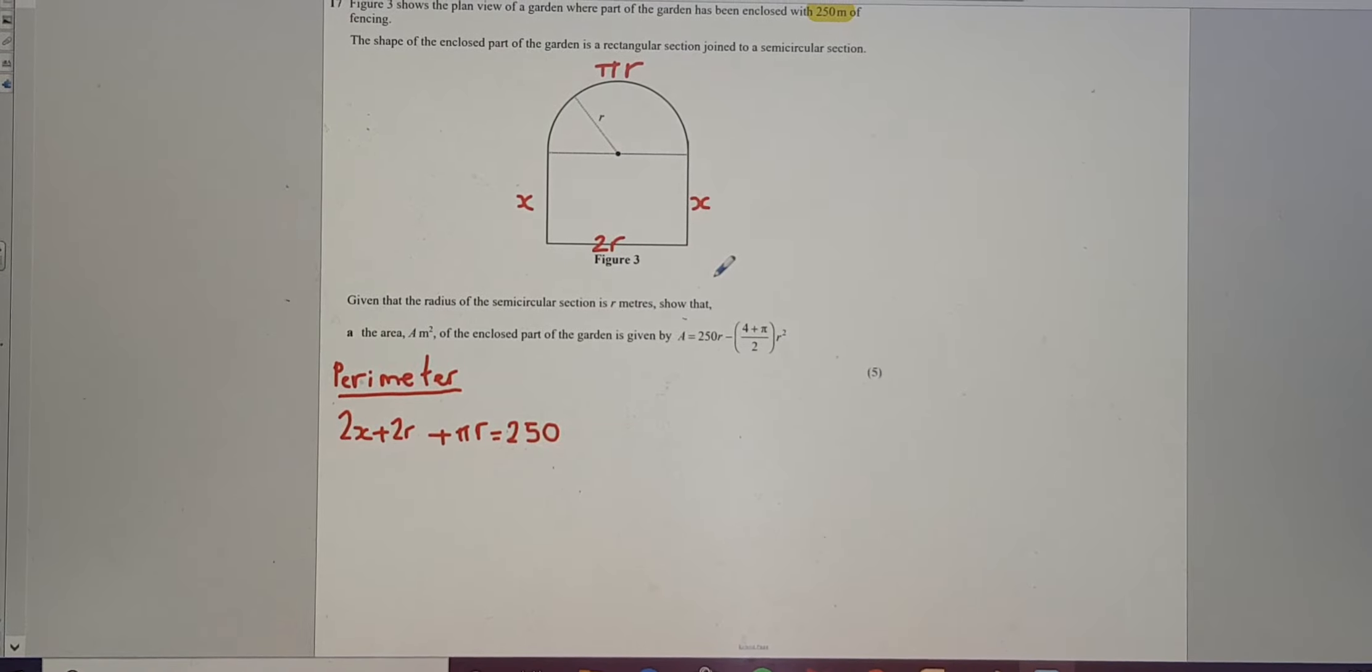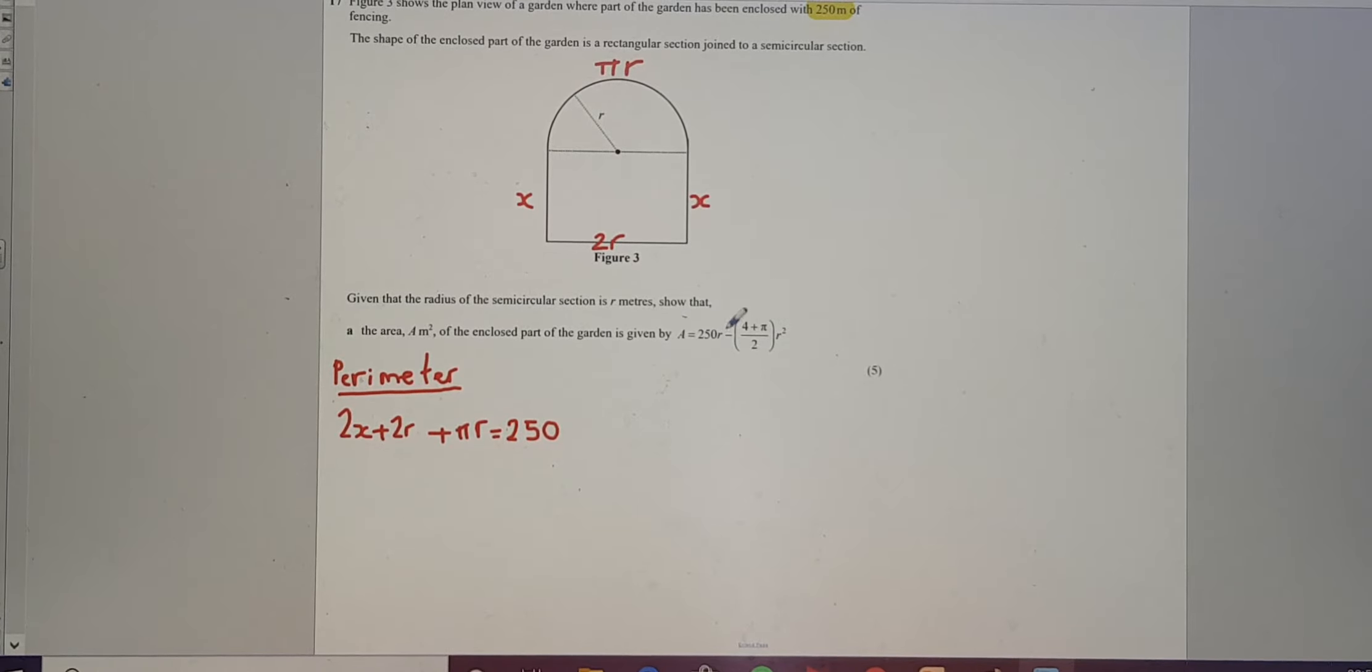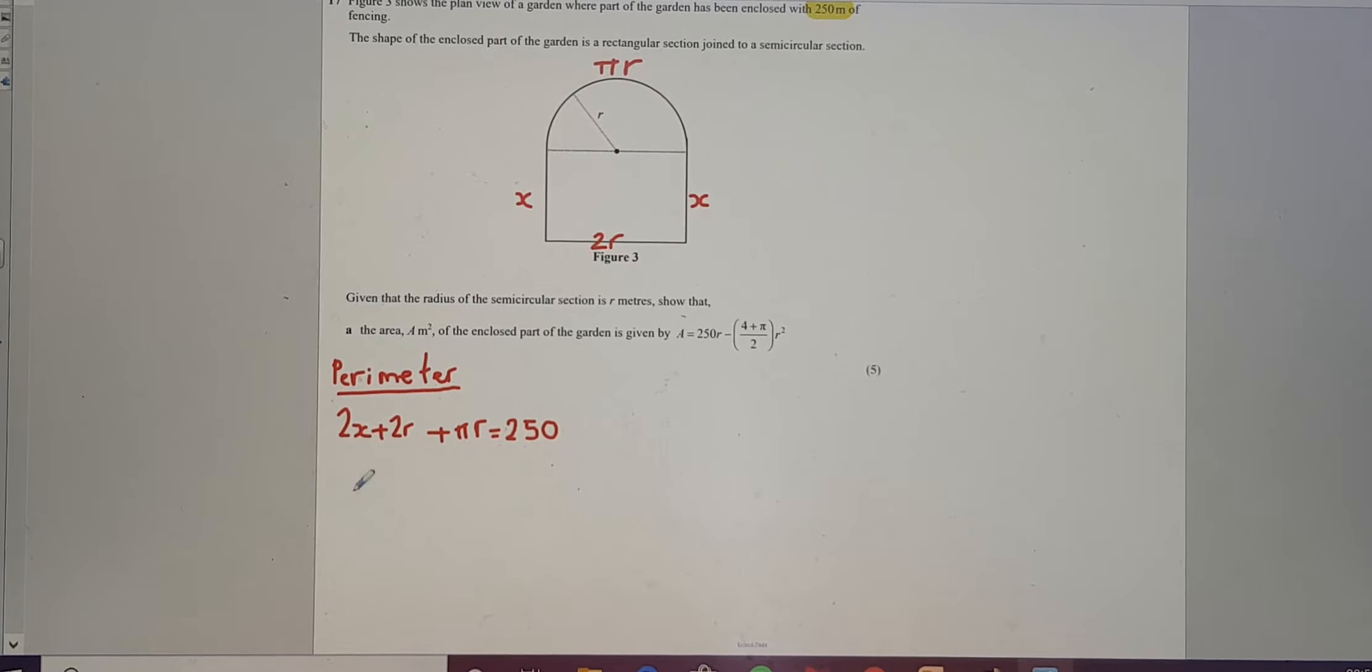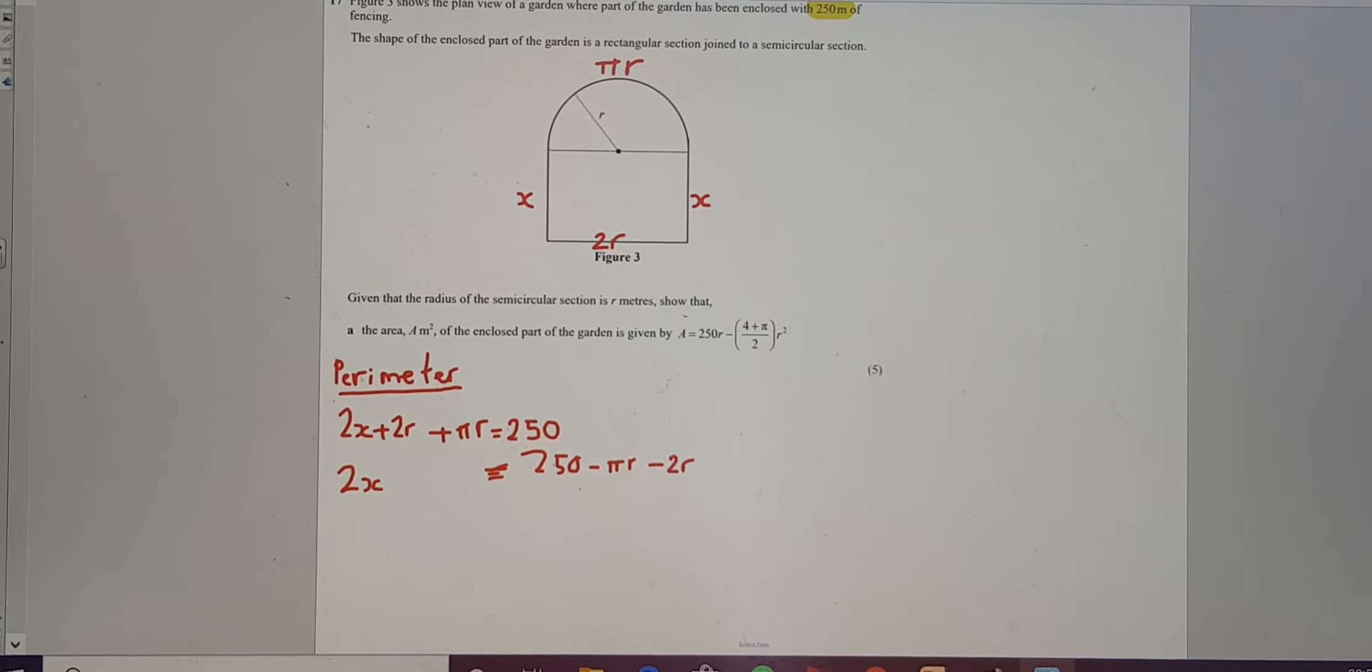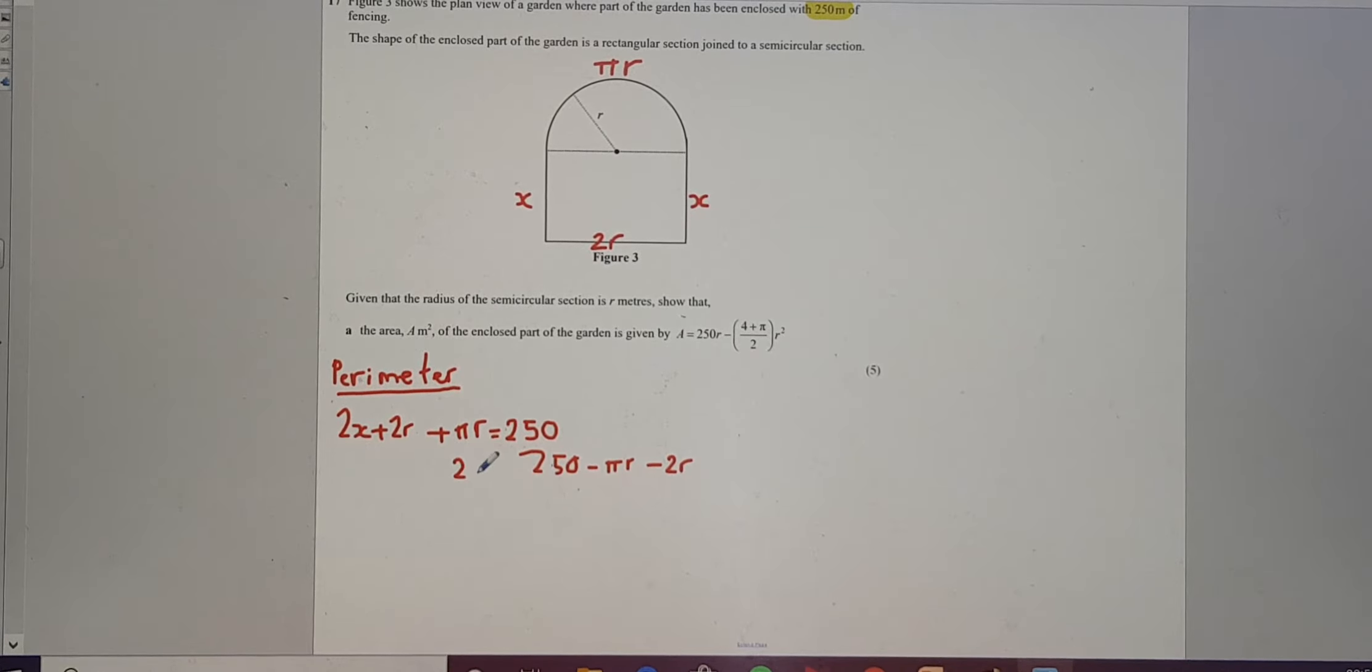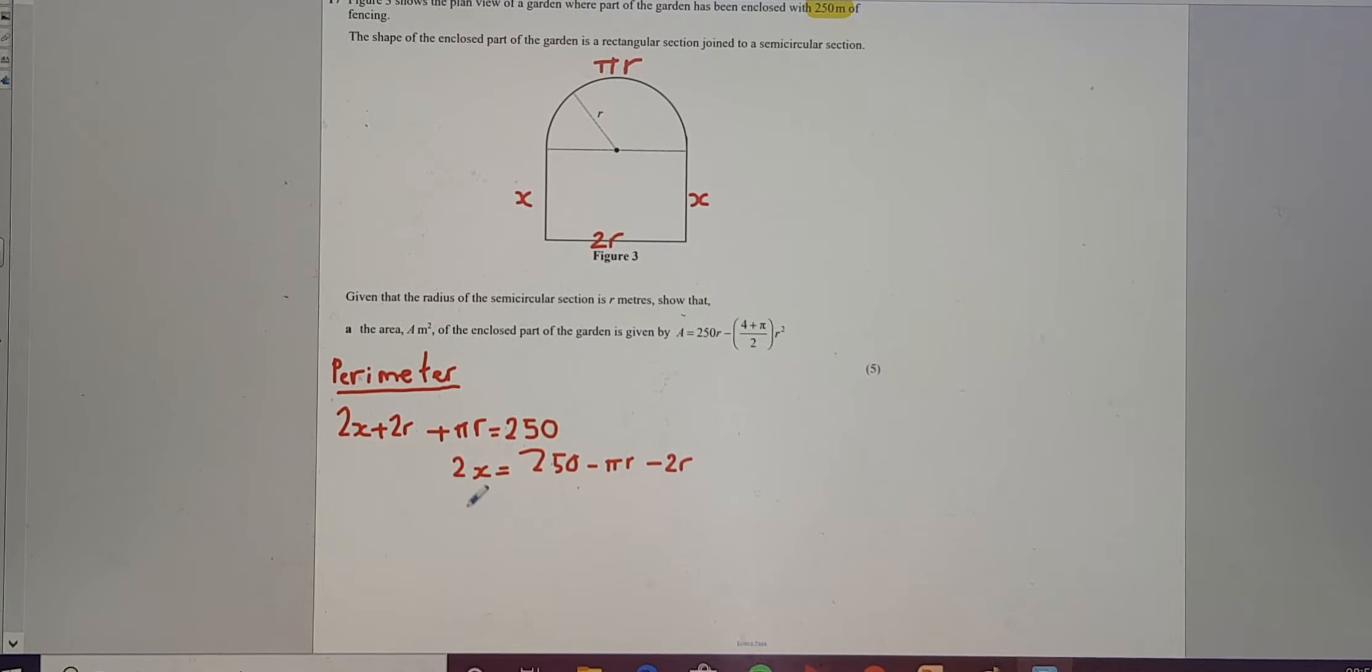So that's going to be 2x, add 2r, add pi r. So the perimeter is 2x, add 2r, add pi r is equal to 250 meters. Let's call that 250. Now, the thing that's going through my head is this. I'm looking at what I need to get to. It hasn't got any x's or anything in it. It's just got r's and pi's and stuff, hasn't it? Therefore, I'm looking at this and thinking, I want to make x the subject of this formula. Right, first thing I'll do is just make that 2x equals 250 minus pi r minus 2r.